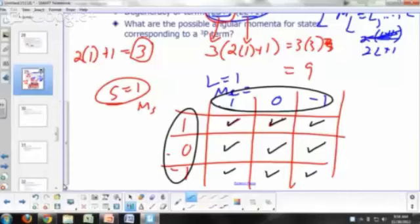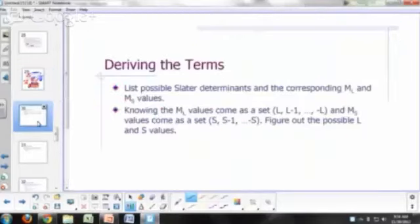So the degeneracy of the triplet P term we say is 9. There are 9 quantum states that are going to have the same energy in a triplet P term.